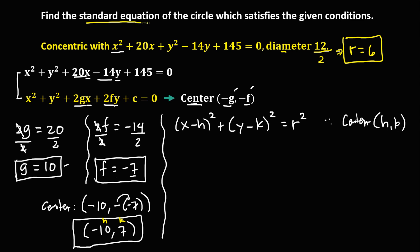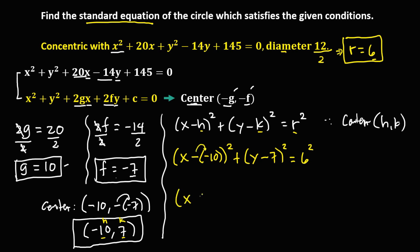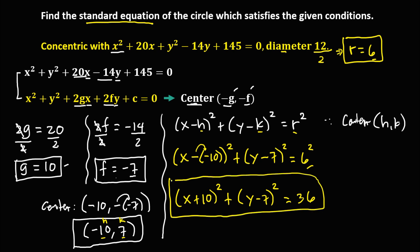To write the standard equation of the circle: x minus h, where h is negative 10, quantity squared, plus y minus k, where k is positive 7, quantity squared, equals r squared, where r is 6. Simplifying: x plus 10, quantity squared, plus y minus 7, quantity squared, equals 36. This is the standard equation of the circle.